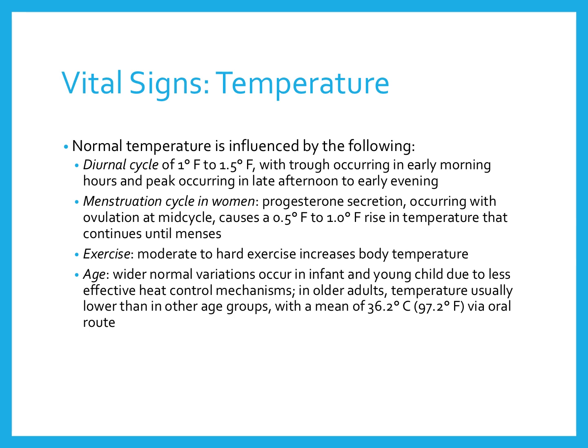Normal temperature is influenced by cycles. It usually peaks in the late afternoon to early evening, so at nighttime it may be a little more elevated than in the morning. The menstruation cycle can cause higher temperatures during menses. Exercise increases body temperature. With age, there's a wider normal variation in infants and young children due to less effective heat control mechanisms and less body fat to keep their bodies warm.